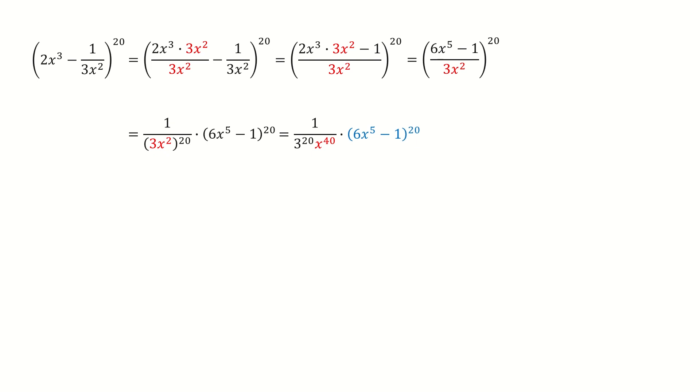Here we can see, for the denominator, we have the x to the power 40, so if we want to find the constant term, that means we need to select the term with the x to the power 40, after expanding this blue term.